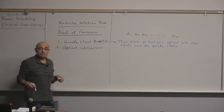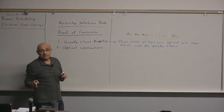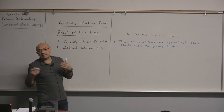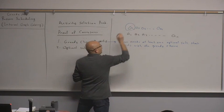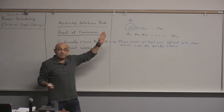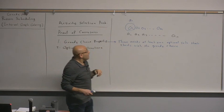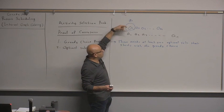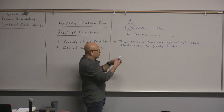We have proven this. We proved that there exists at least one optimal solution that starts with the greedy choice by considering an optimal solution that doesn't start with the greedy choice. We said: if we have an optimal solution that does not start with the greedy choice, I can take o1 and replace it with a1. When I replace it with a1, this is going to be a valid solution because a1 finishes before o1, so it's not going to conflict with any of the others. The size of the solution is the same because I took one activity and replaced it with another. So this proves that I can always start with the greedy choice.